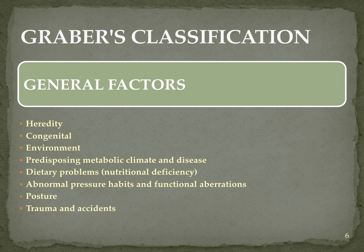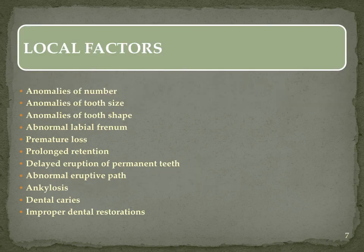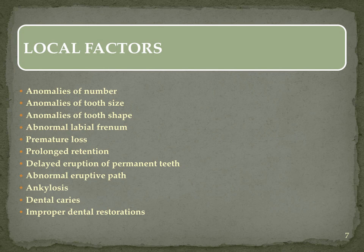Graeber's classification broadly classifies it into general and local factors. General factors include heredity, congenital environment, predisposing metabolic climate and disease, dietary problems, abnormal pressure habits and functional aberrations, posture, and trauma and accidents. Local factors — those affecting a specific area only — include anomalies of number, tooth size, tooth shape, abnormal labial frenum, premature loss or prolonged retention of primary teeth, delayed eruption of permanent teeth, abnormal eruptive path, ankylosis, dental caries and improper dental restorations.